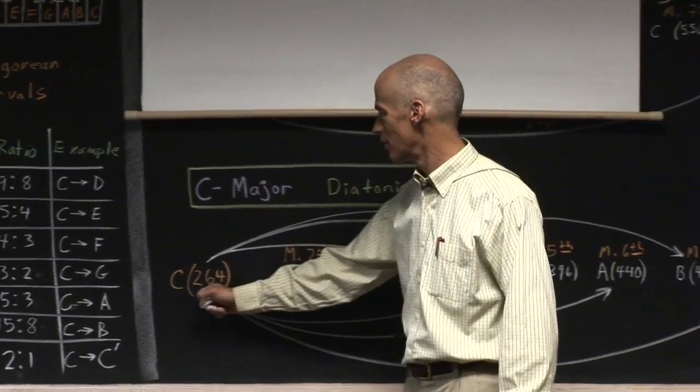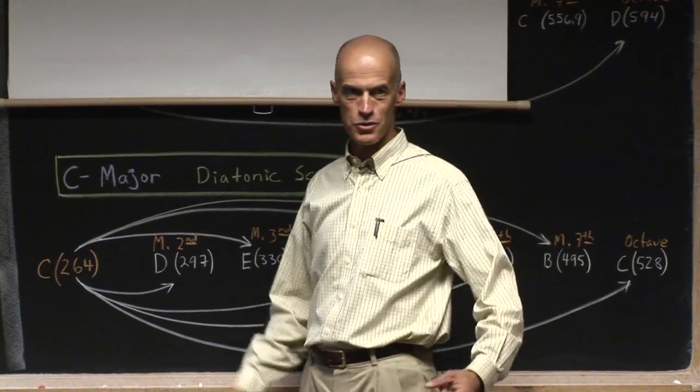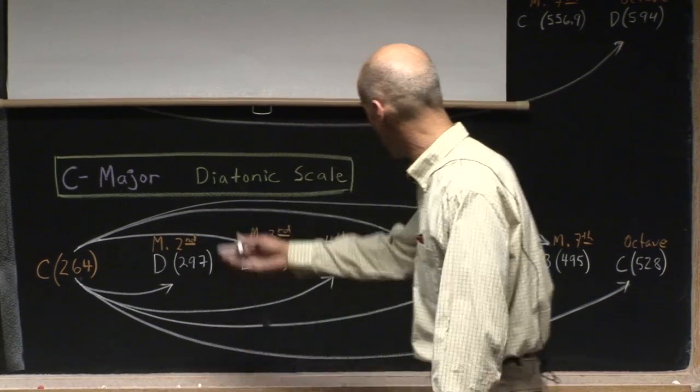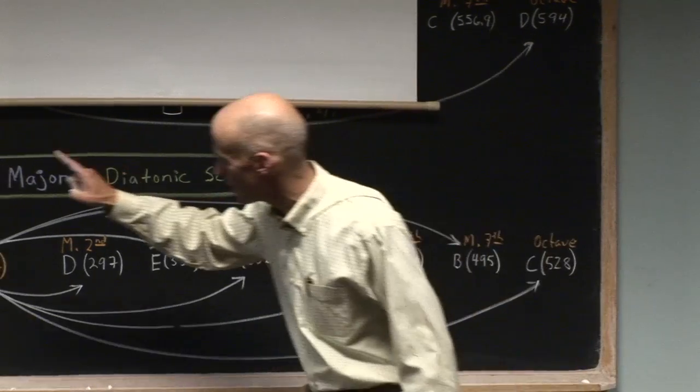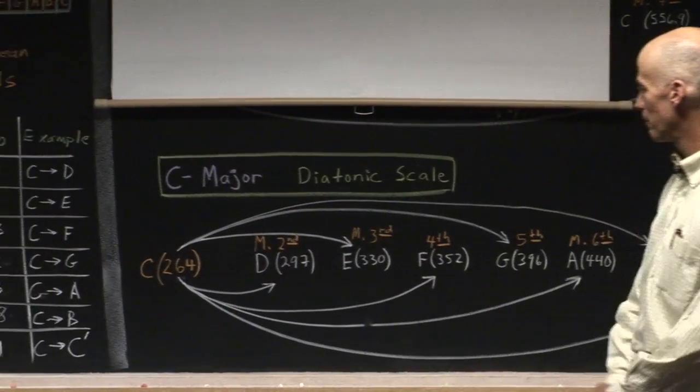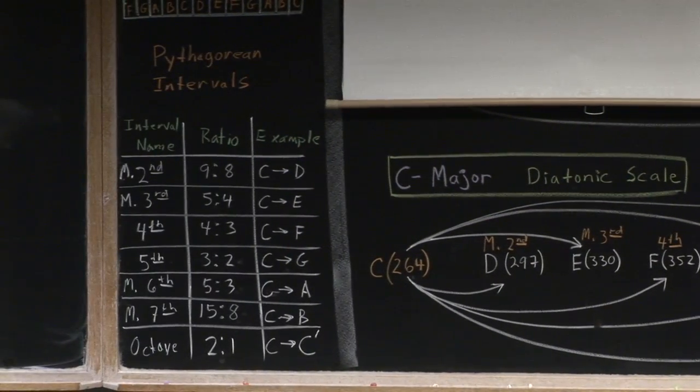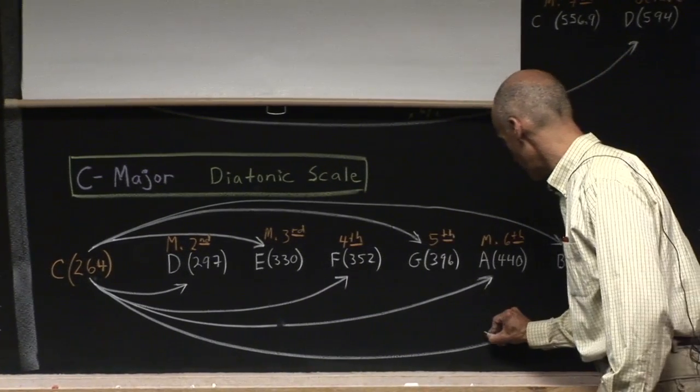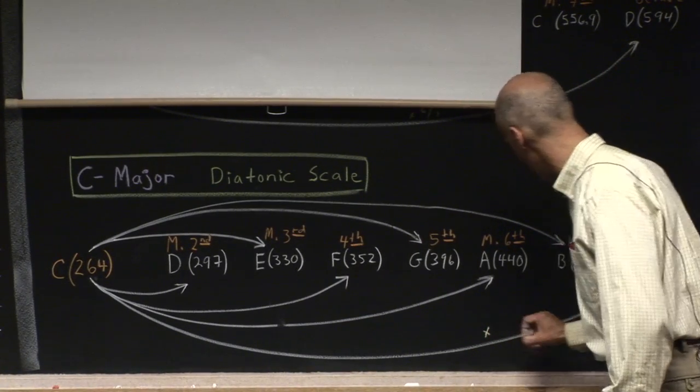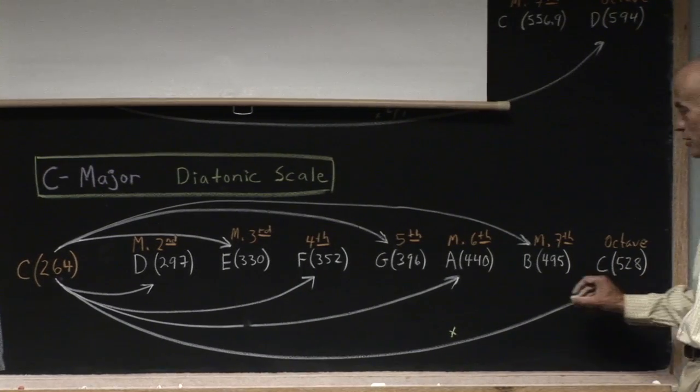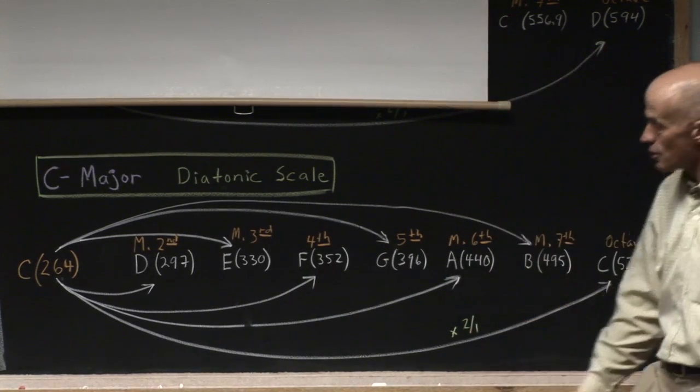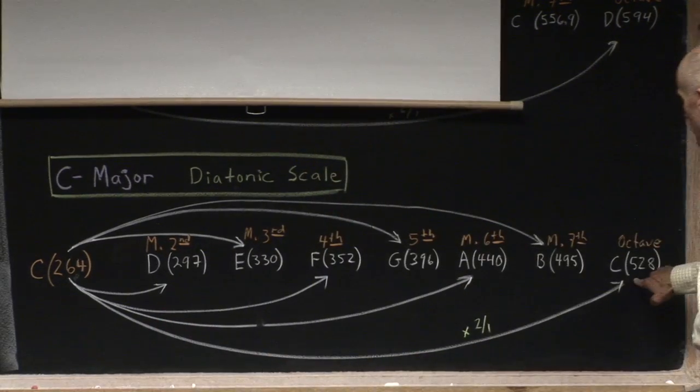Let's imagine we have 264, a string vibrating 264 times per second. Now I can create this whole scale based upon these ratios right here. How did I get the octave? I multiplied to get the frequencies by 2 over 1, or just by 2. So I took 264, I doubled it. There's the octave higher.